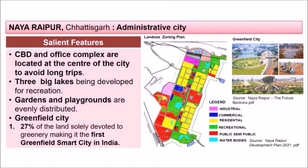The CBD and office complex were located at the center of the city to avoid long trips. There were three big lakes planned for recreation and evenly distributed gardens and playgrounds. Naya Raipur was a green field city where 27 percent of the land was solely devoted to greenery, qualifying it to become the first green field smart city in India.